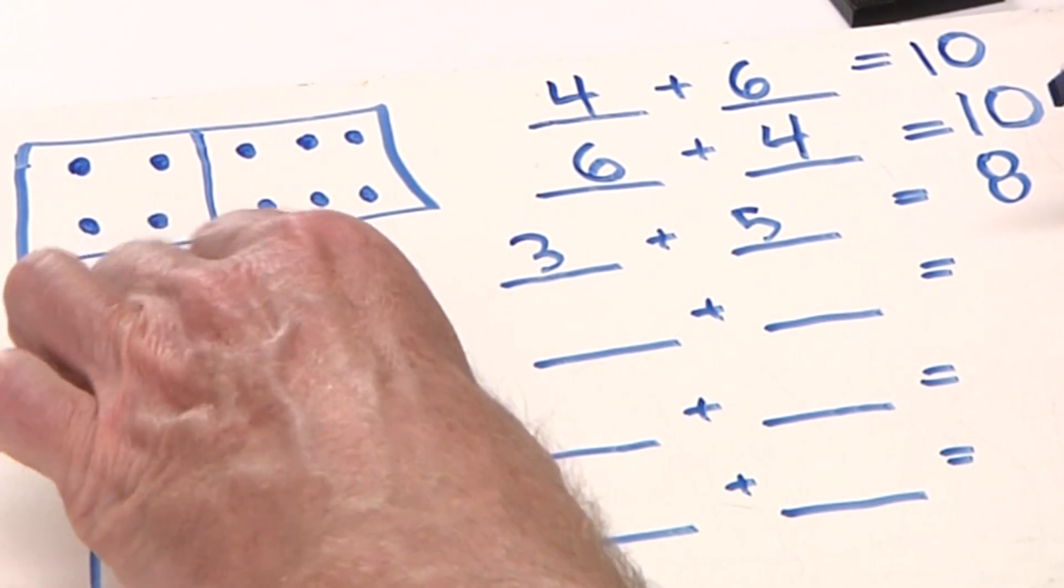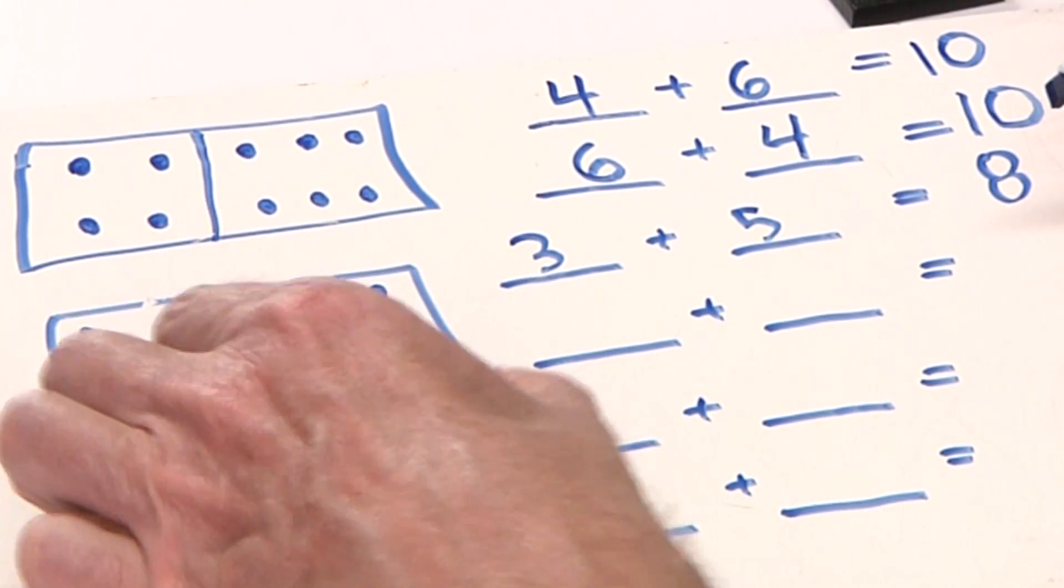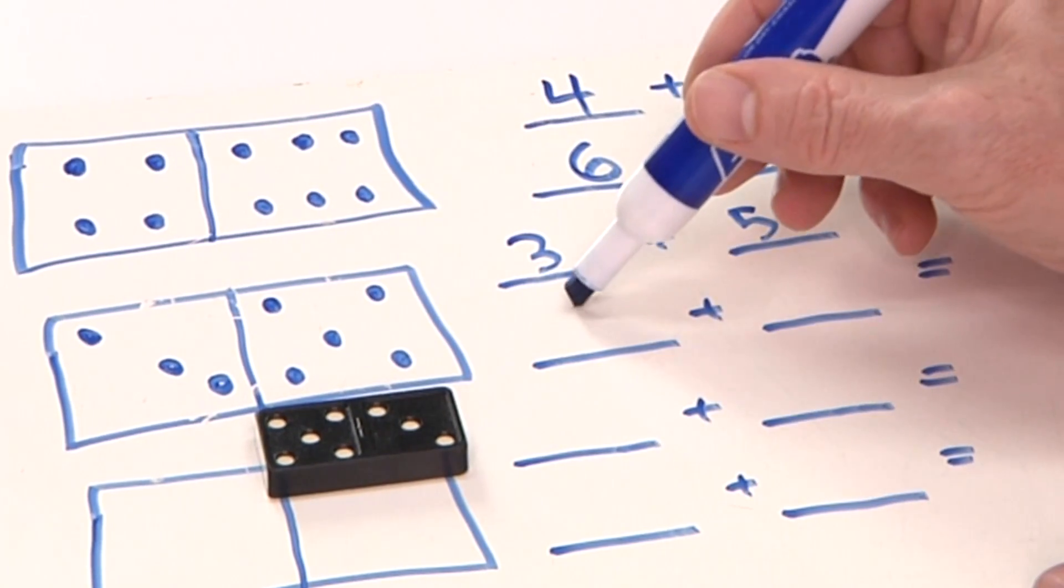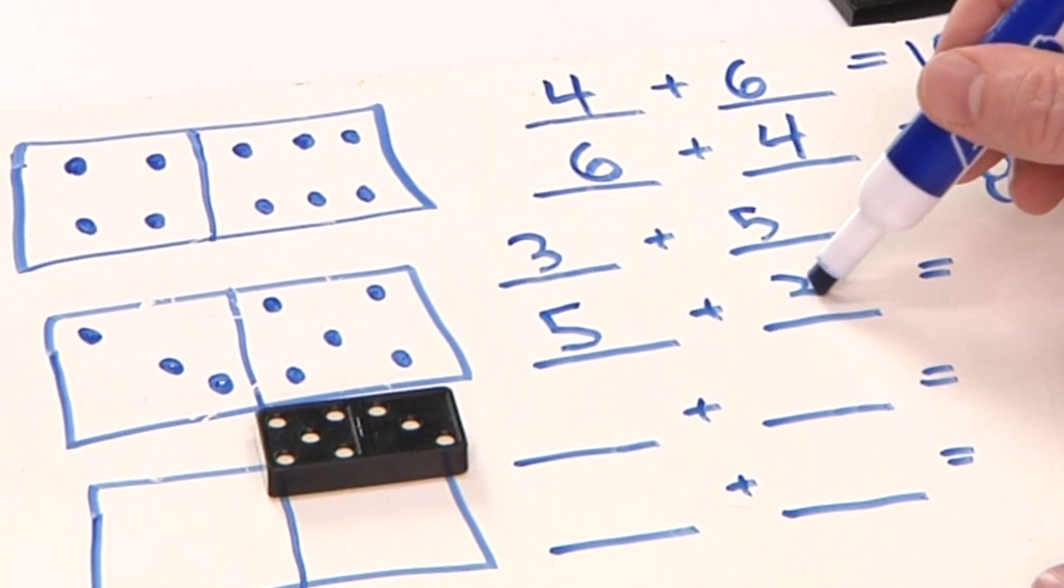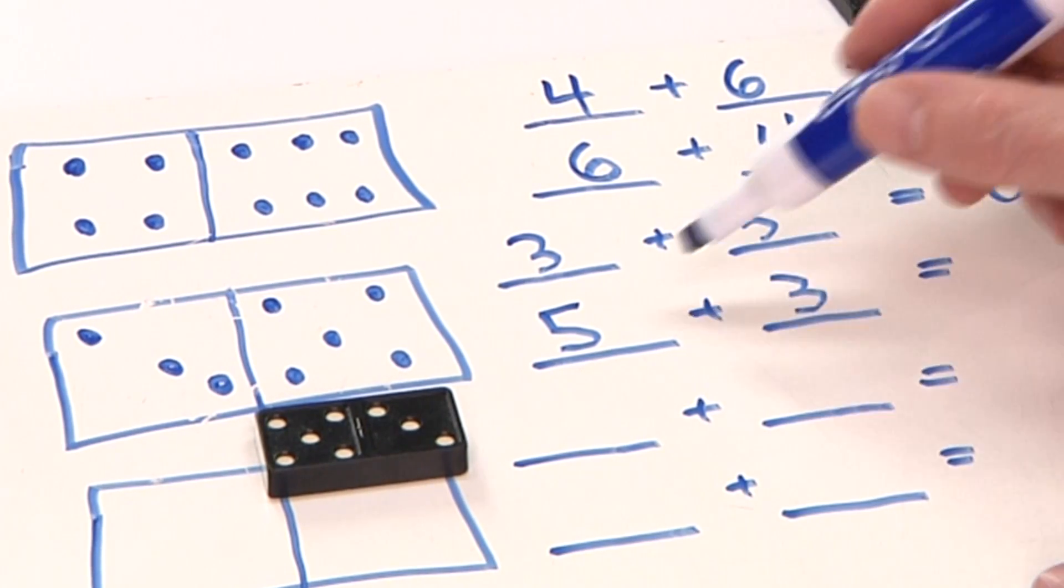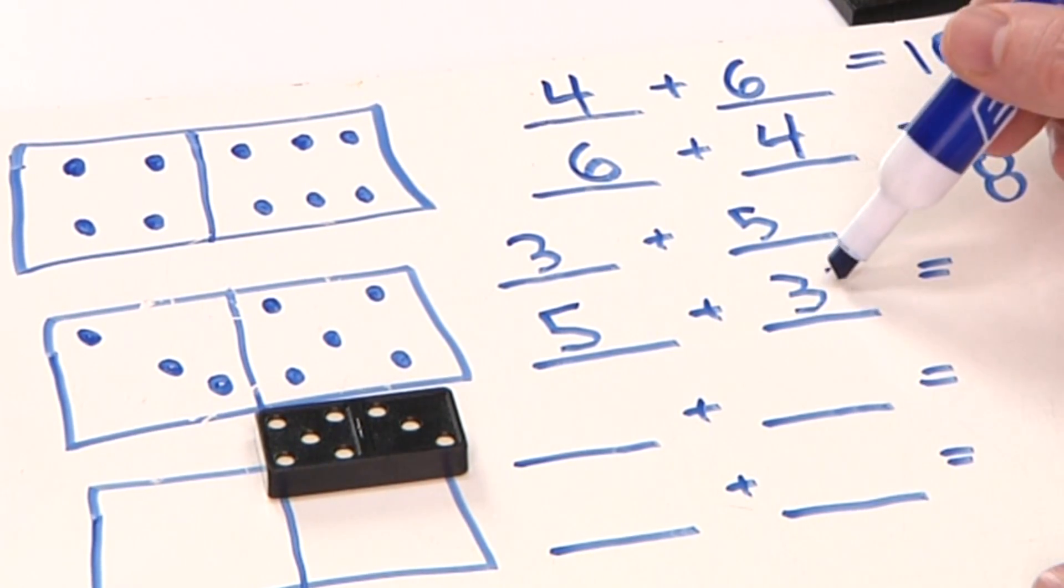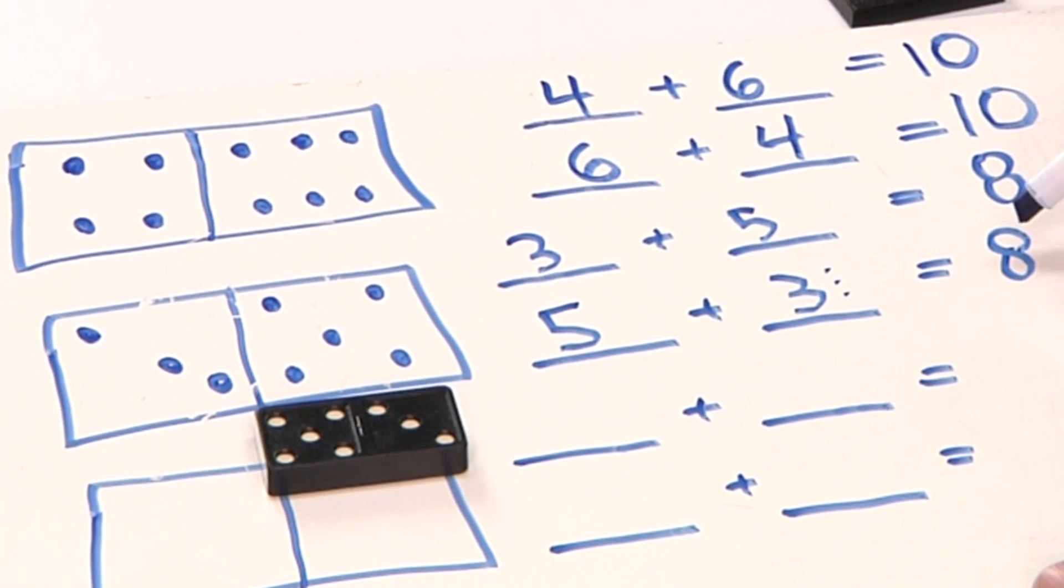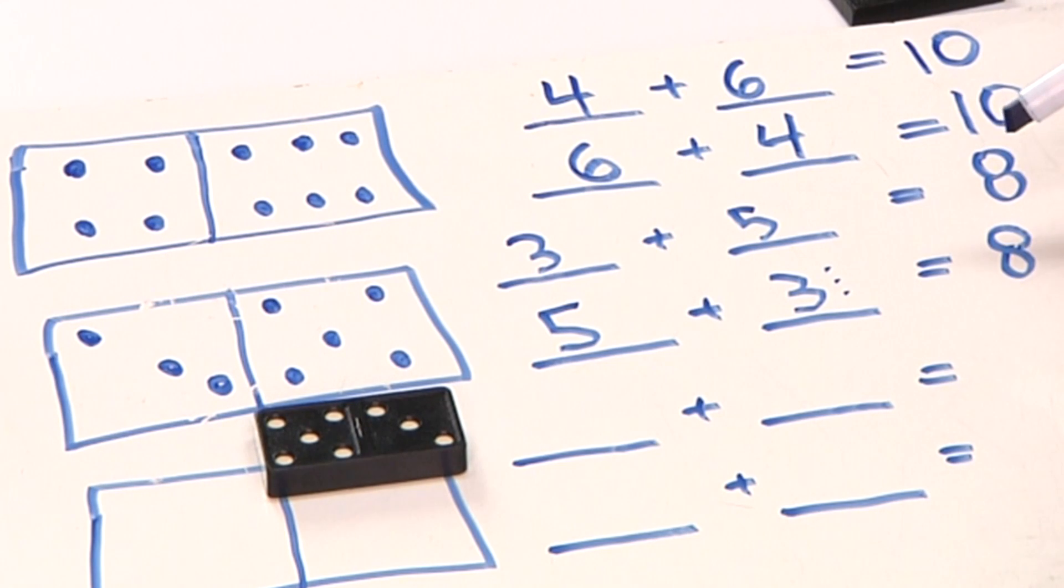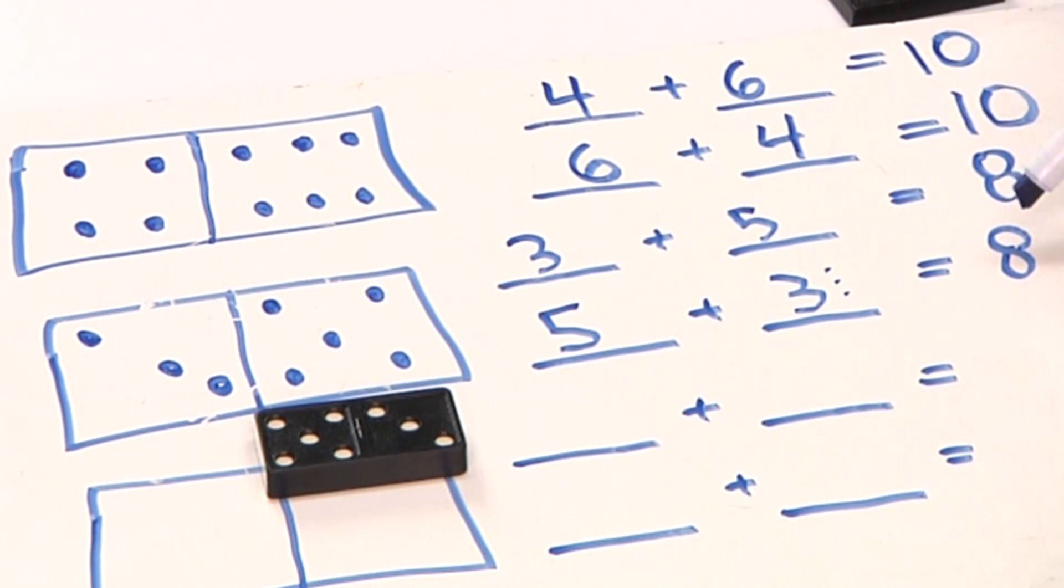If I take this domino and turn it around, I'll have 5 right here and 3 right there. So 5, 6, 7, 8. We're seeing that we can add numbers in any order and the sum is the same.